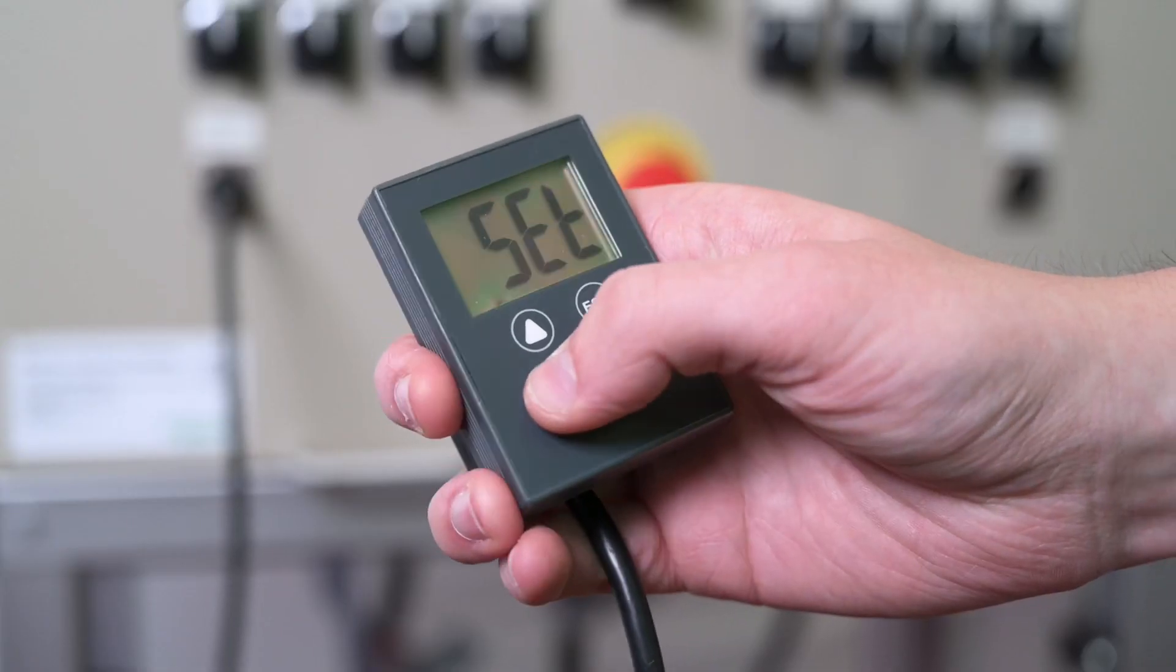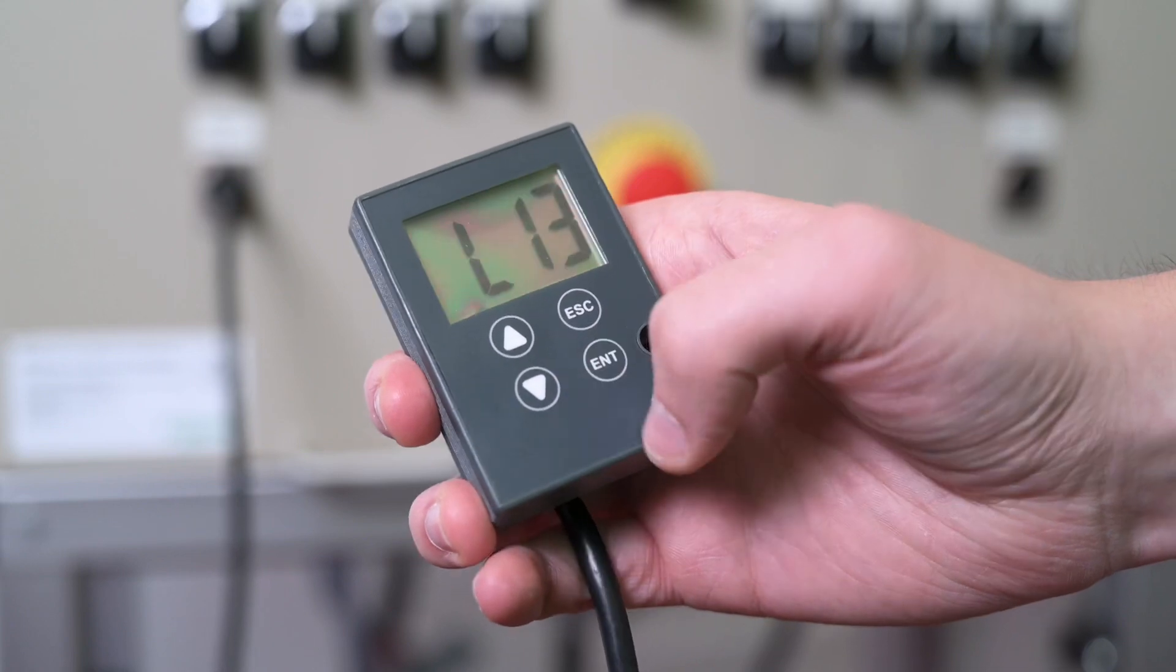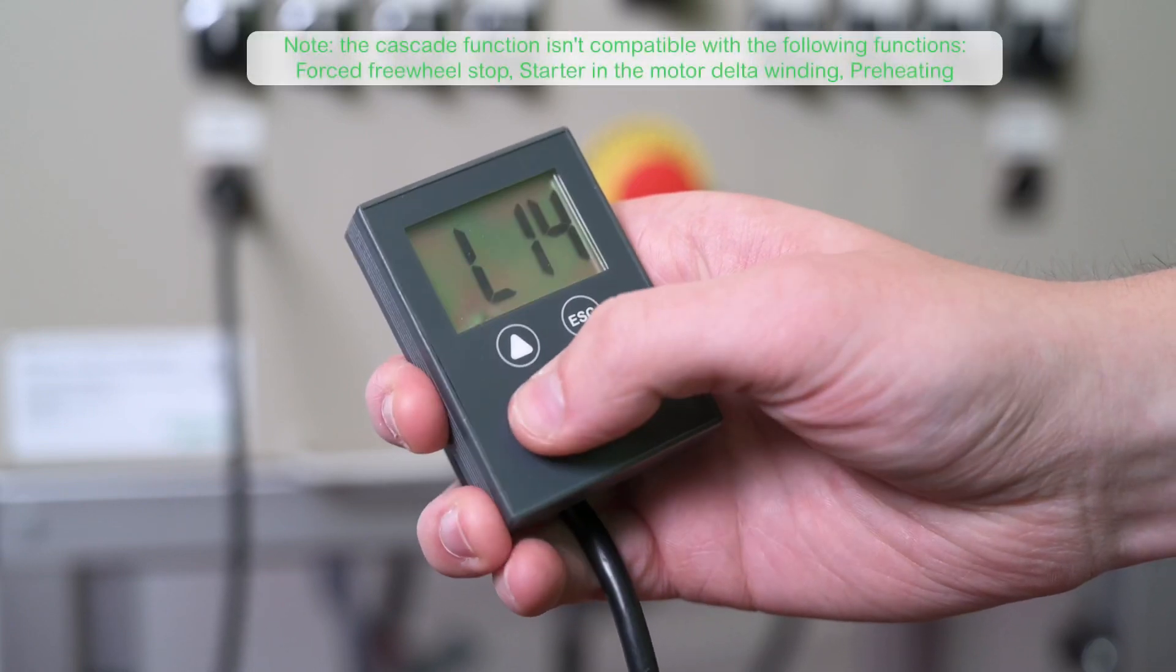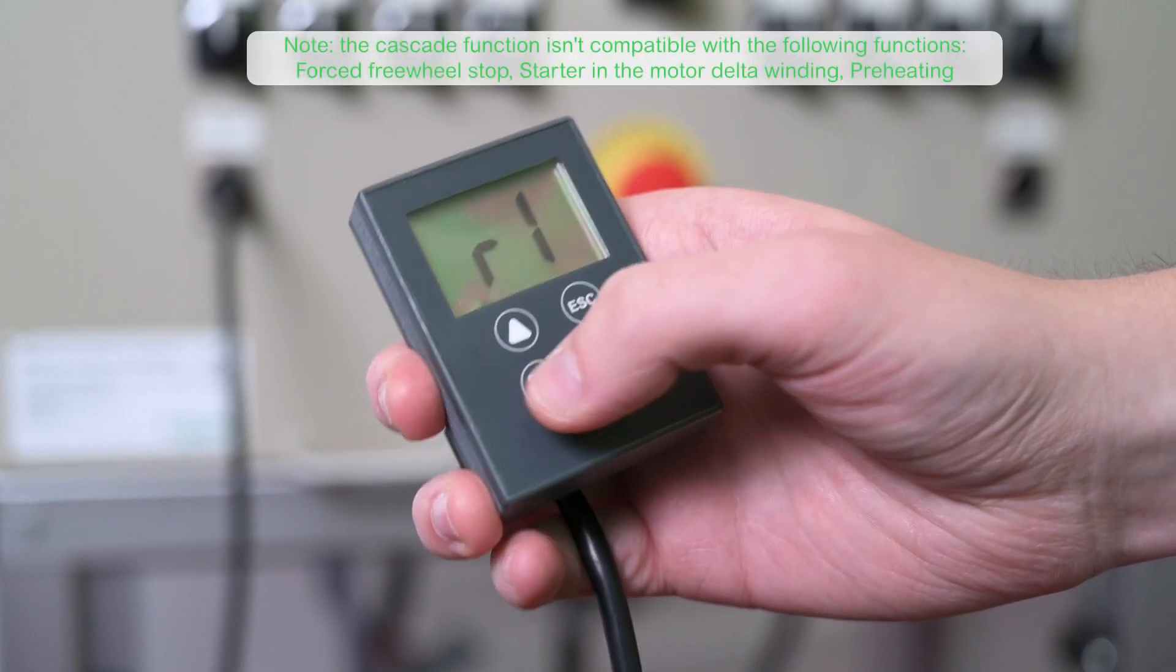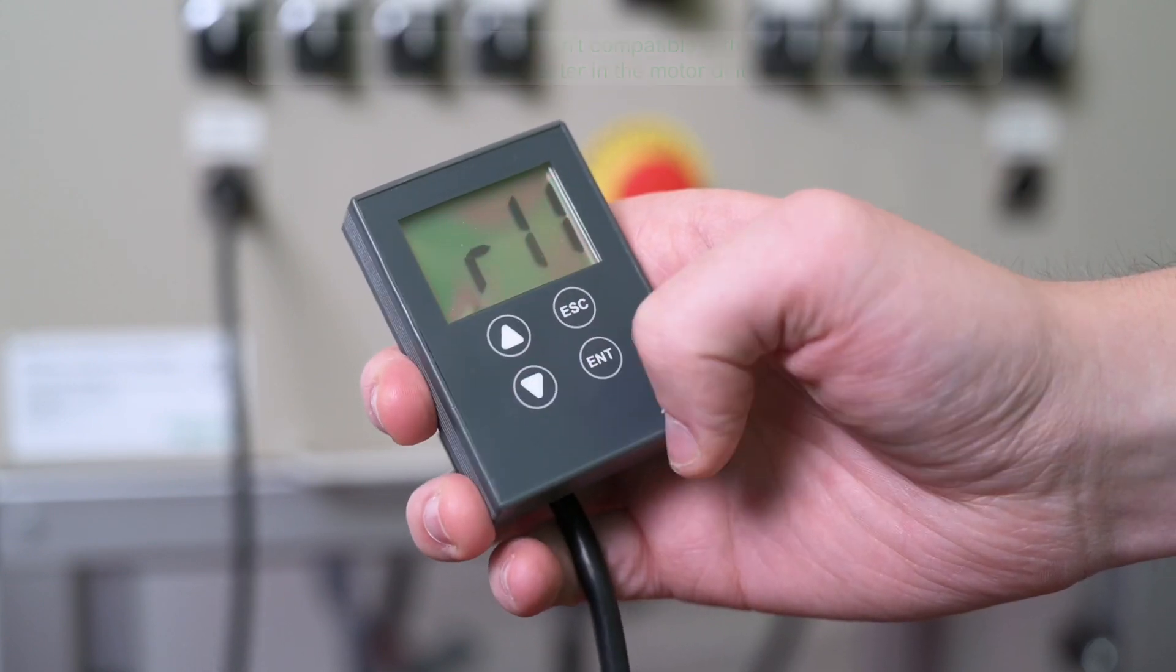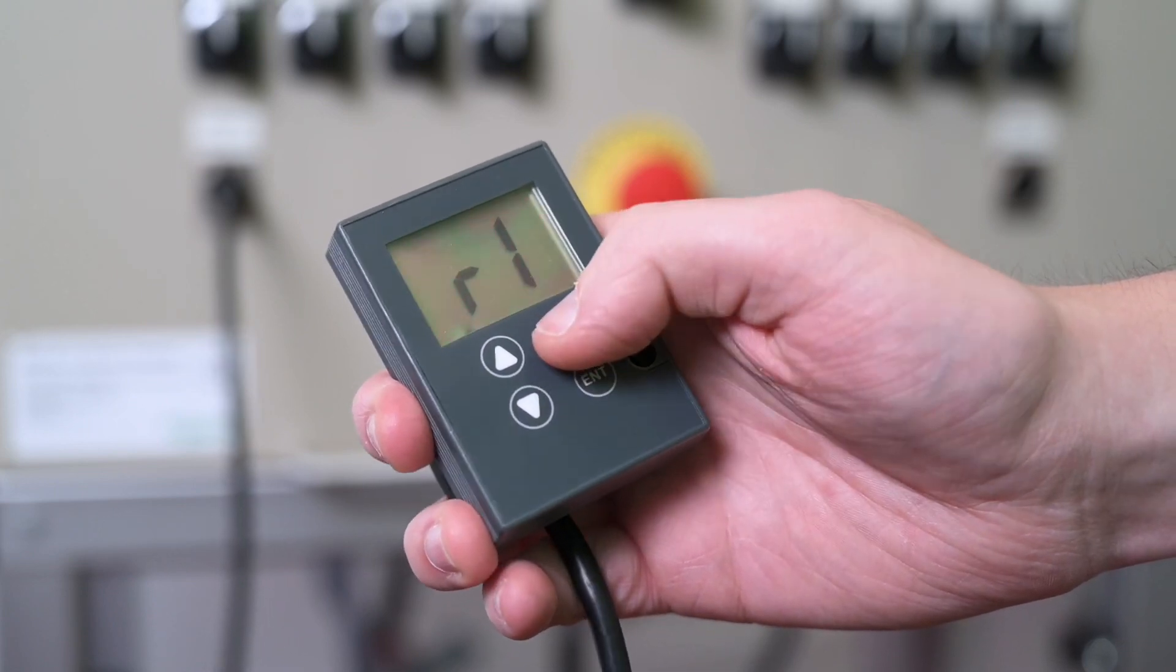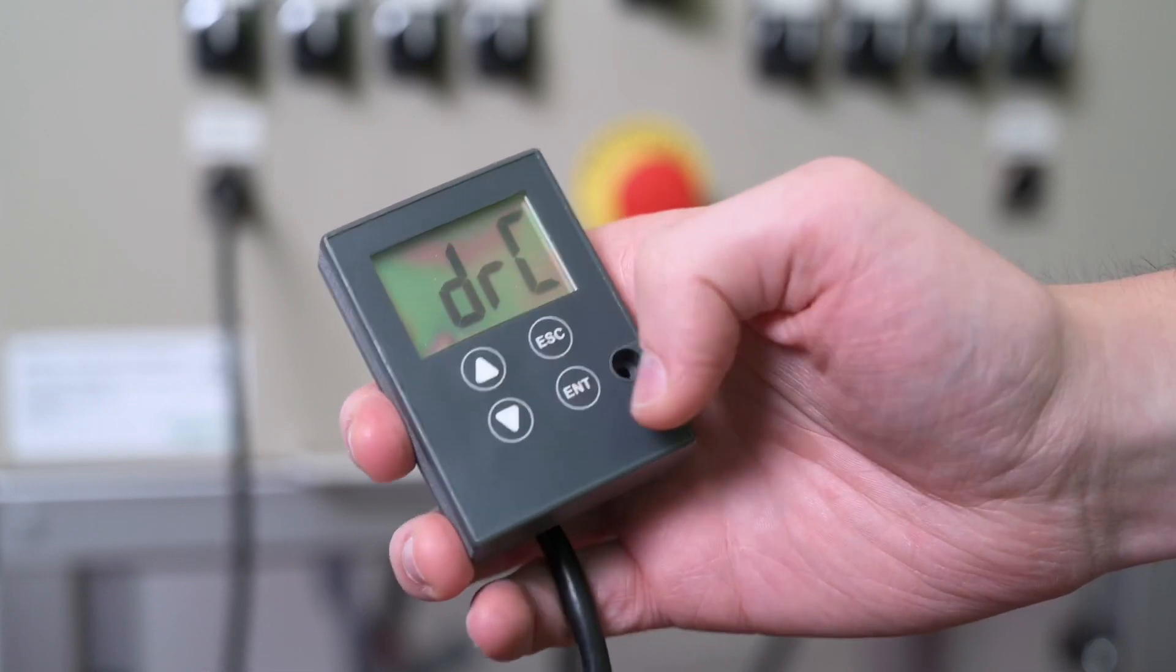First, we need to assign the Relay R1 to Isolating Relay function. Then we are going to activate the Cascade function CSC.